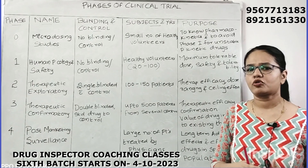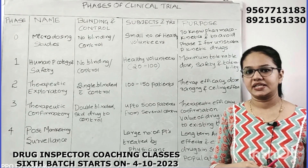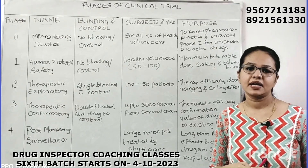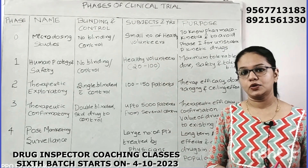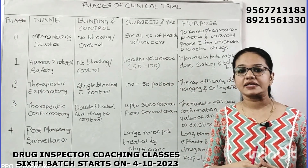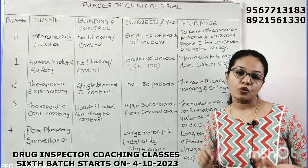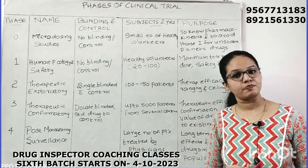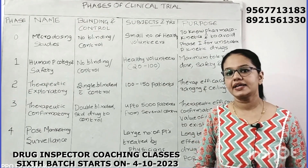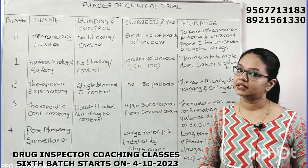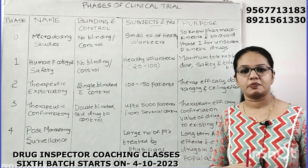In Phase 0, we will be taking only a small number of volunteers — about 10 to 15 participants. The micro-dosing study is a first-in-man trial, because here we will be finding out how the drug is engaging with its expected targets. This is carried out in 10 to 15 participants.